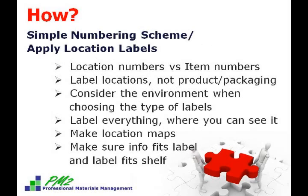The next step is to develop a simple numbering scheme for your locations and to label them. Location numbers identify where you will find the product — they are not item numbers. When choosing and applying your labels, apply them to the storage locations, not the product. The product is likely to get picked up and moved around, and the box is likely to be thrown away. Consider your environment — is it wet or does it get excessively hot? Both can do a real number on labels if they don't have adhesive designed for that particular environment. Magnetic labels are good for locations that need to be flexible or moved around, but they also get knocked off easily by forklifts. Don't forget to label everything: up high, pallet locations, everything.